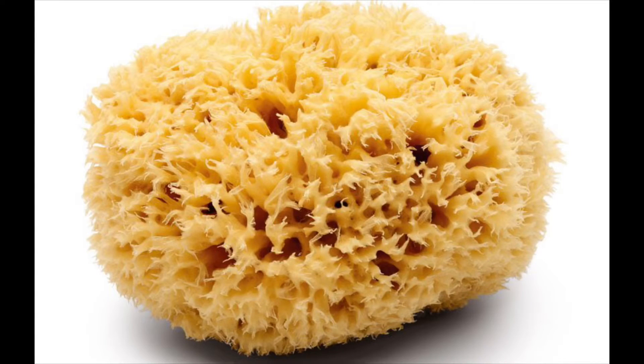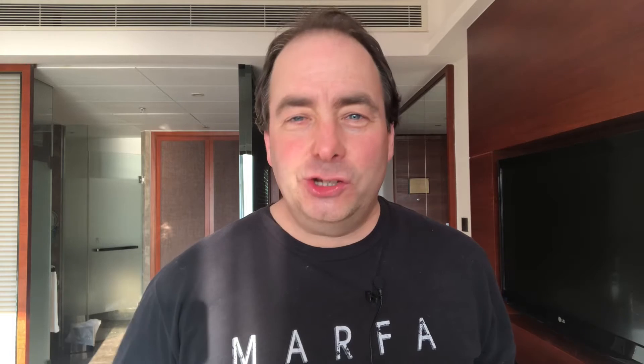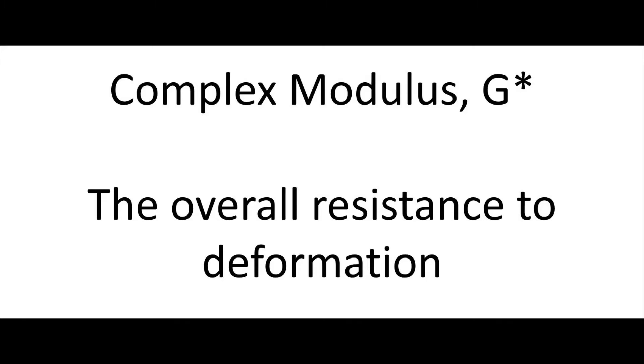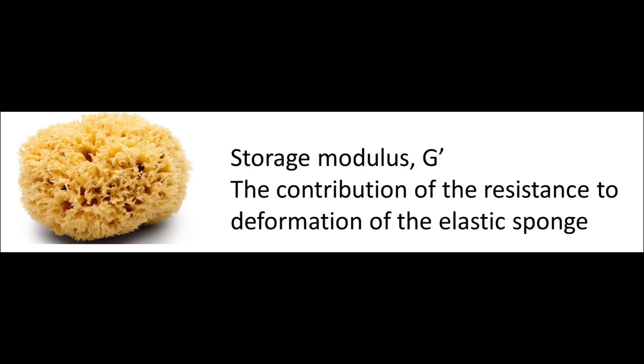So imagine you have a sponge, a bit like a bathroom sponge or something you would wash your car with. Imagine you completely drench that sponge in water. The overall wet soaked mass of that sponge has a certain resistance to deformation, and we can think of this as the complex modulus. We would denote this by G* if we're working in shear. Now the sponge itself has a certain rigidity that contributes to the complex modulus, and because the sponge is an elastic solid, we can think about this contribution as G prime — the storage modulus or the elastic modulus.